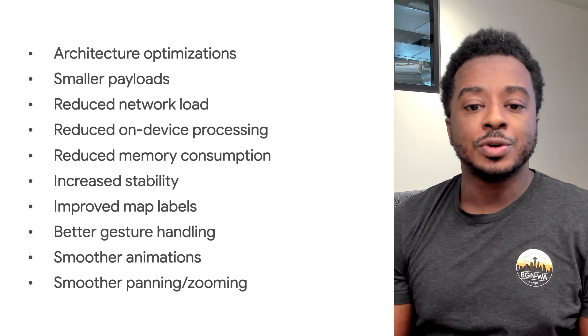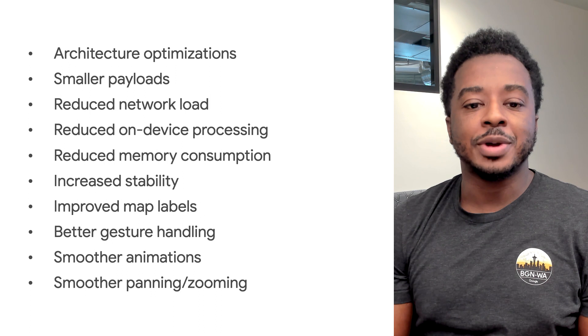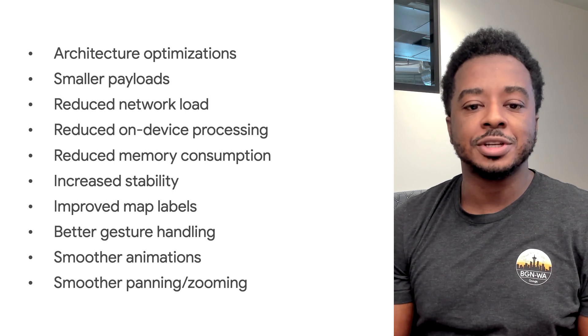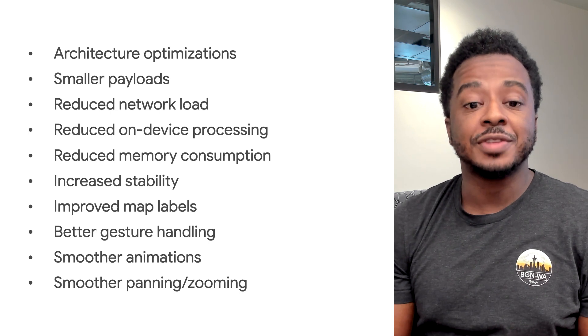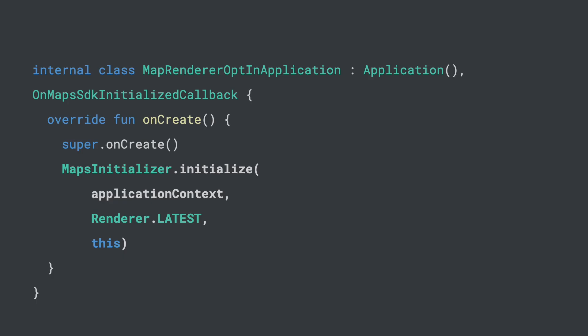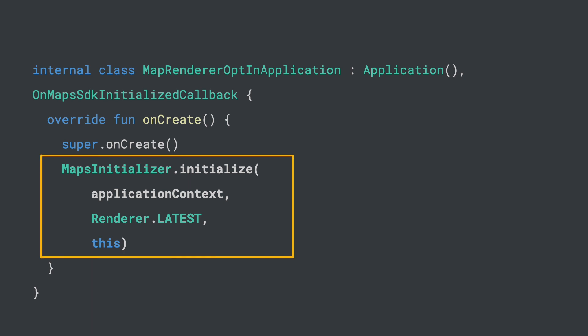The new renderer also features improvements to overall gesture handling, resulting in better animations and smoother panning and zooming for your end users, as well as more fluid transitions and clearer positioning of labels. To try the renderer right now, you just have to opt-in in your code. For more information on how you can enable the new renderer for the Maps SDK for Android, as well as device and version compatibility, check out the documentation linked below.